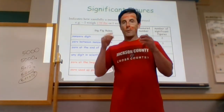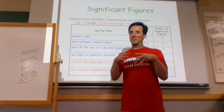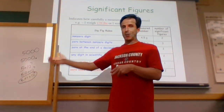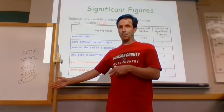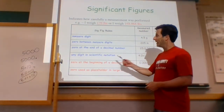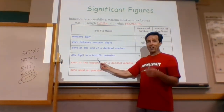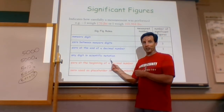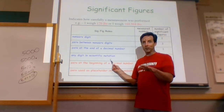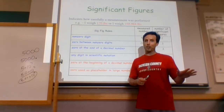When I write a number down, I have to be thinking about how many digits I want, and that determines how I write it. Any digit written in scientific notation is automatically significant — if you didn't want to write it down, you shouldn't have written it down in the first place.